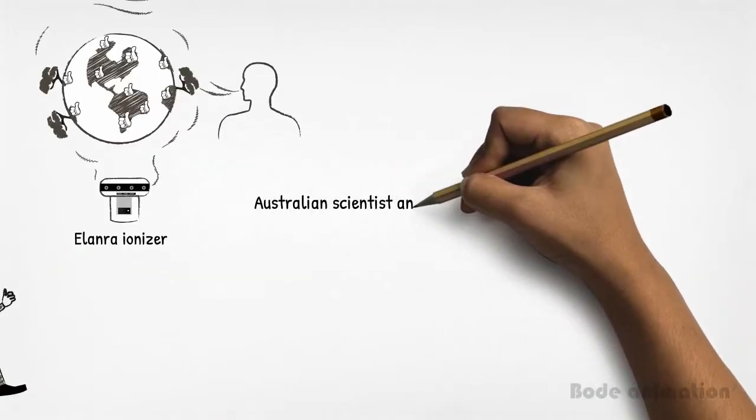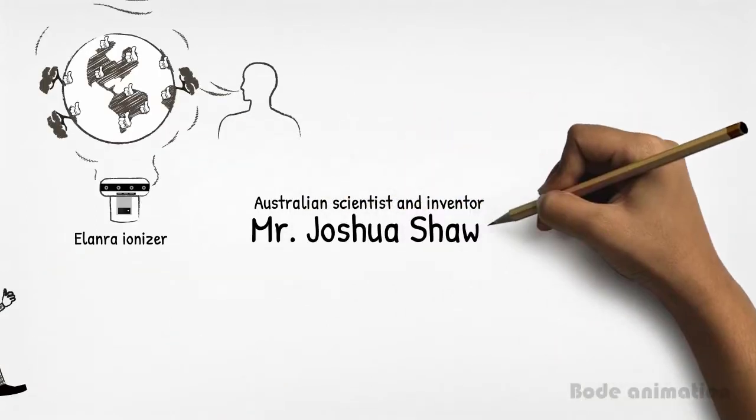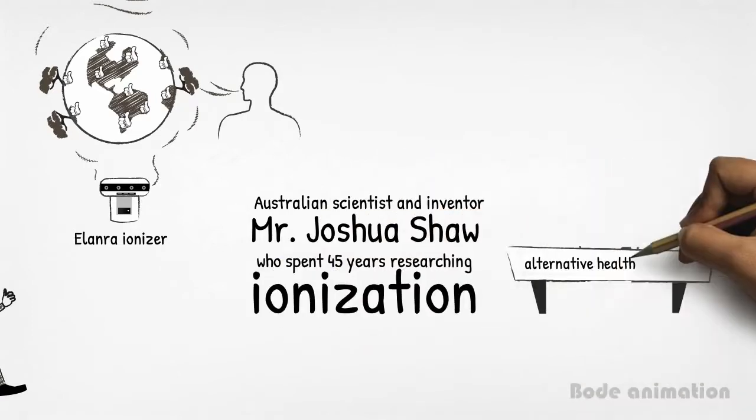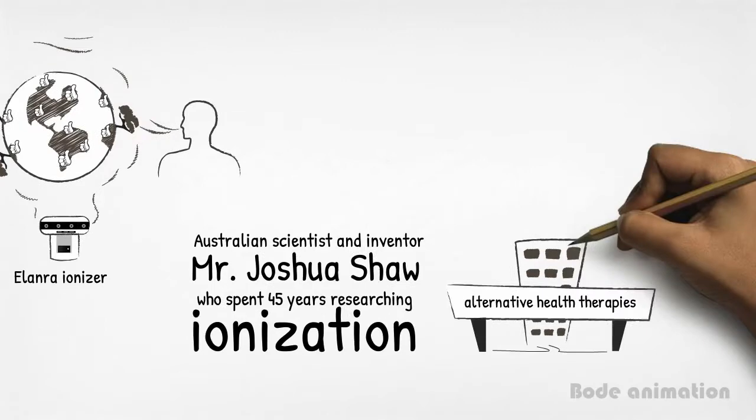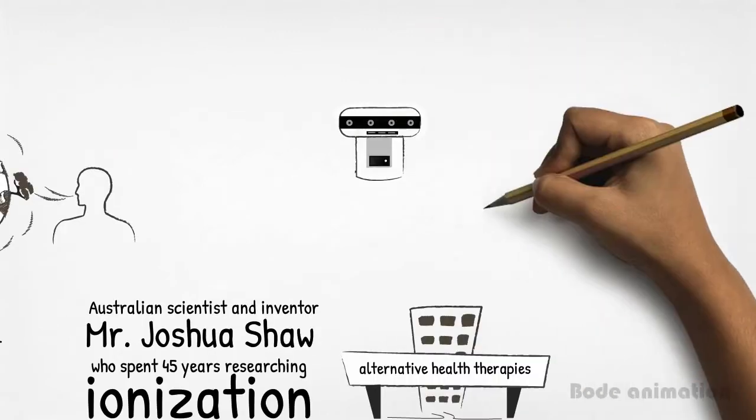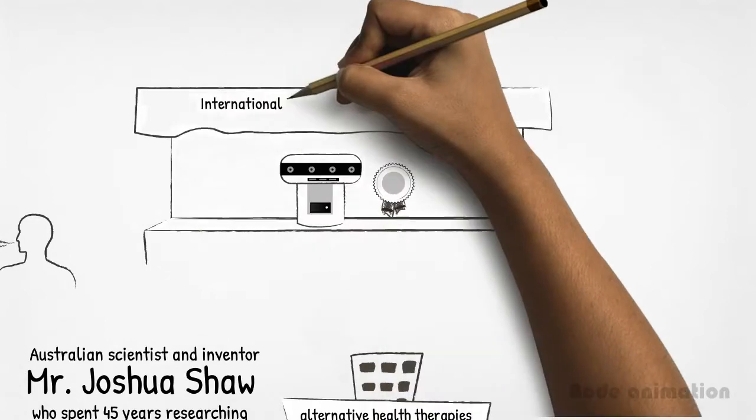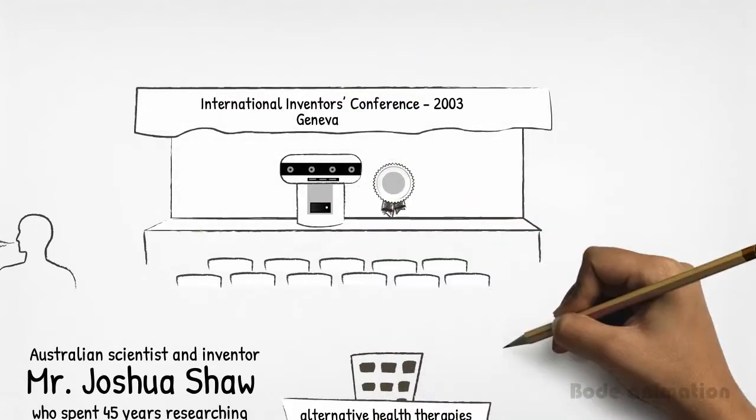Australian scientist and inventor Mr. Joshua Shaw, who spent 45 years researching ionization and other alternative health therapies, developed the Elanra Negative Ion Generator, which won a silver medal in the International Inventors Conference held in Geneva in 2003.